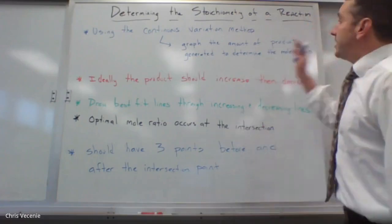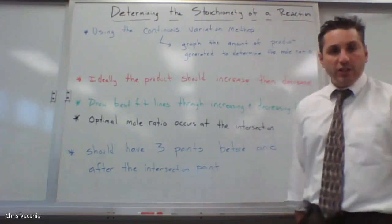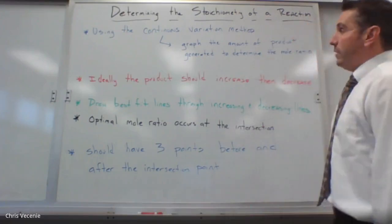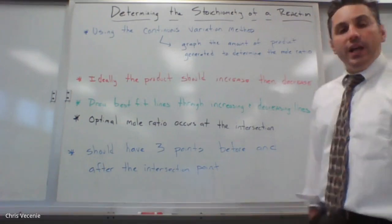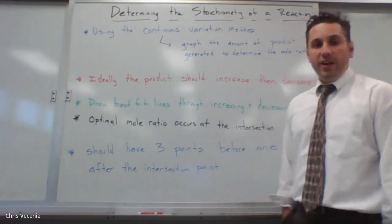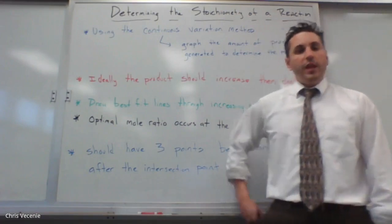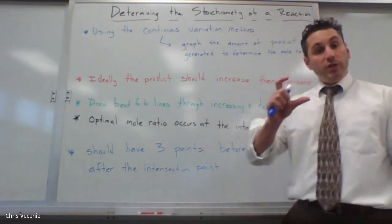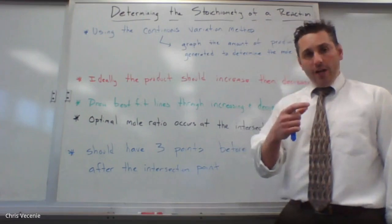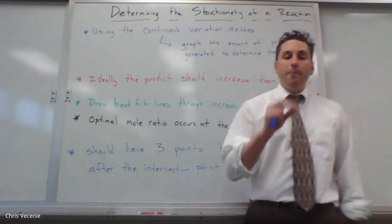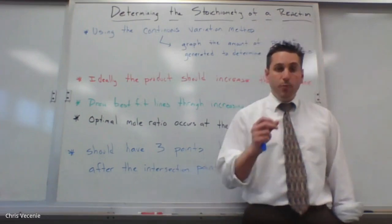The title of the lab is determining the stoichiometry of a reaction. What's governing what's happening today is the continuous variations method, because what you're going to do is continuously, one after another, vary the amount of each of the reactants that you put in.